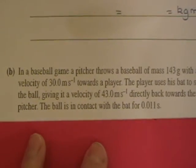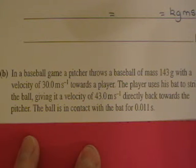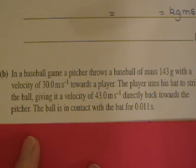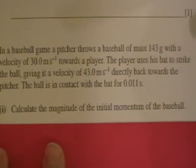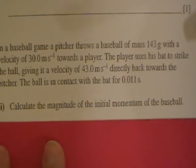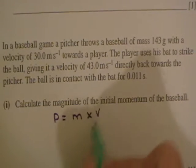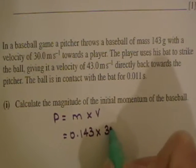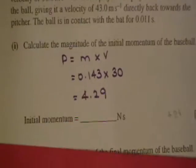In a baseball game, a pitcher throws a baseball of mass 143 grams with a velocity of 30 m/s towards a player. The player uses his bat to strike the ball, giving it a velocity of 43 m/s directly back towards the pitcher. The ball is in contact with the bat for 0.011 seconds. Calculate the magnitude of the initial momentum of the ball: momentum is mass times velocity, so 0.143 kg × 30 = 4.29 newton seconds.